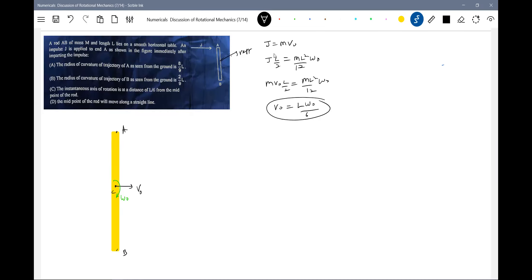The midpoint of the rod will move along a straight line. The instantaneous center is at a distance of l by 6 from the midpoint. I think first option c and d will manage. The different points will have different velocity, so there's some point p. I'll put it - I'm trying to search instantaneous center.